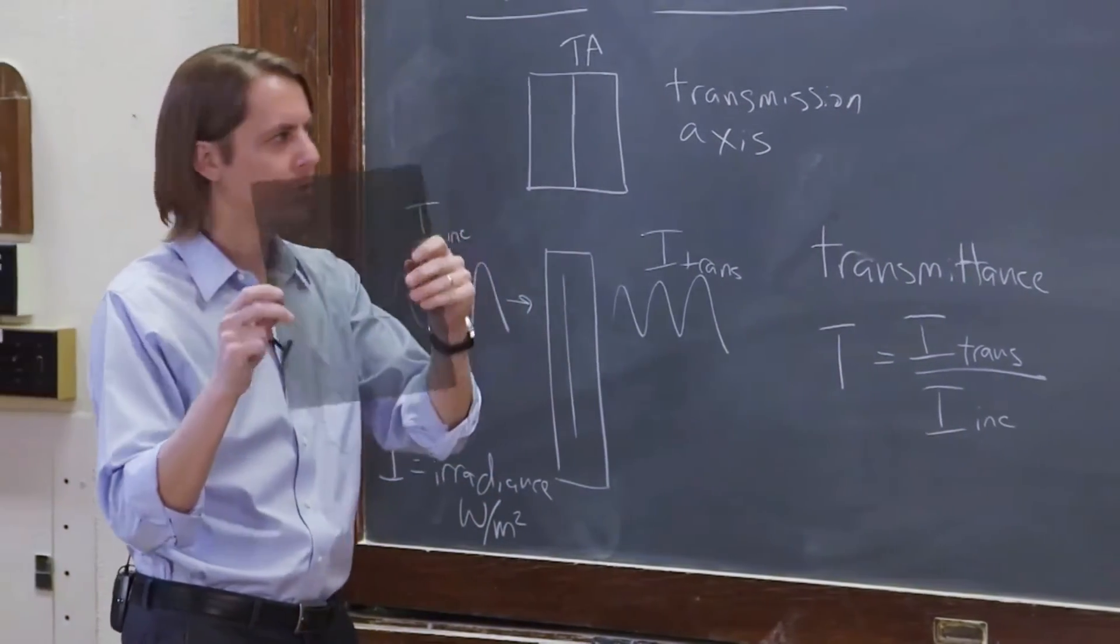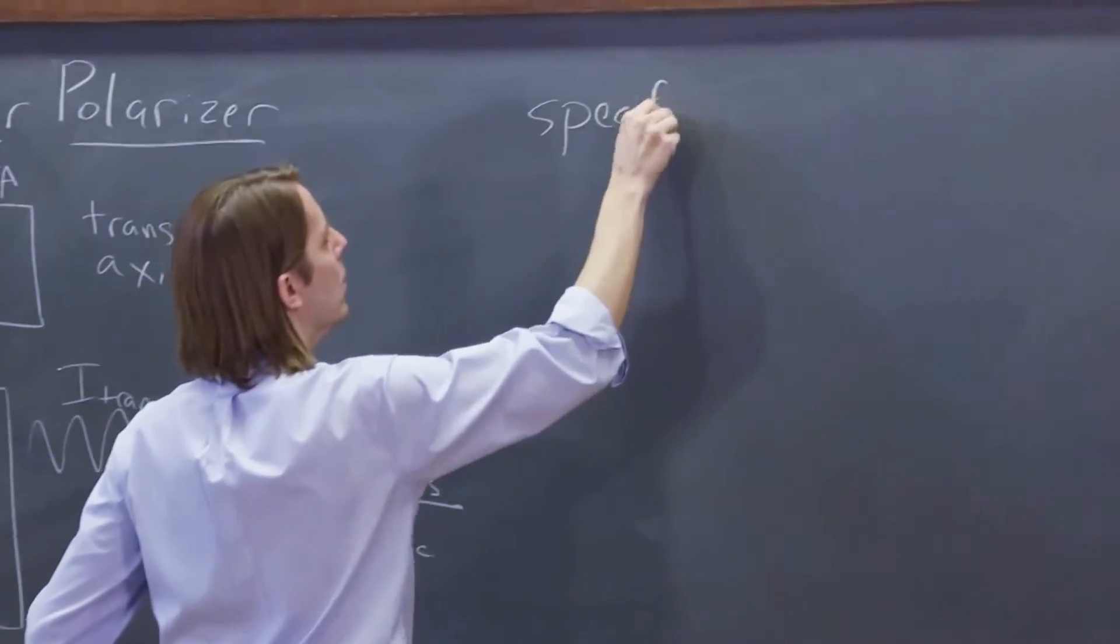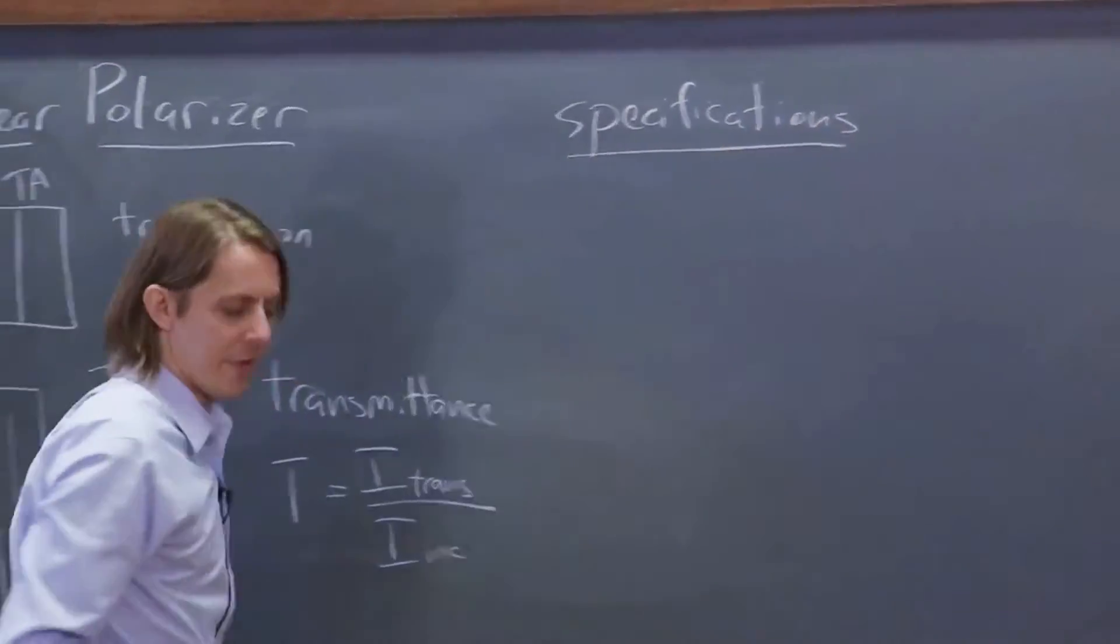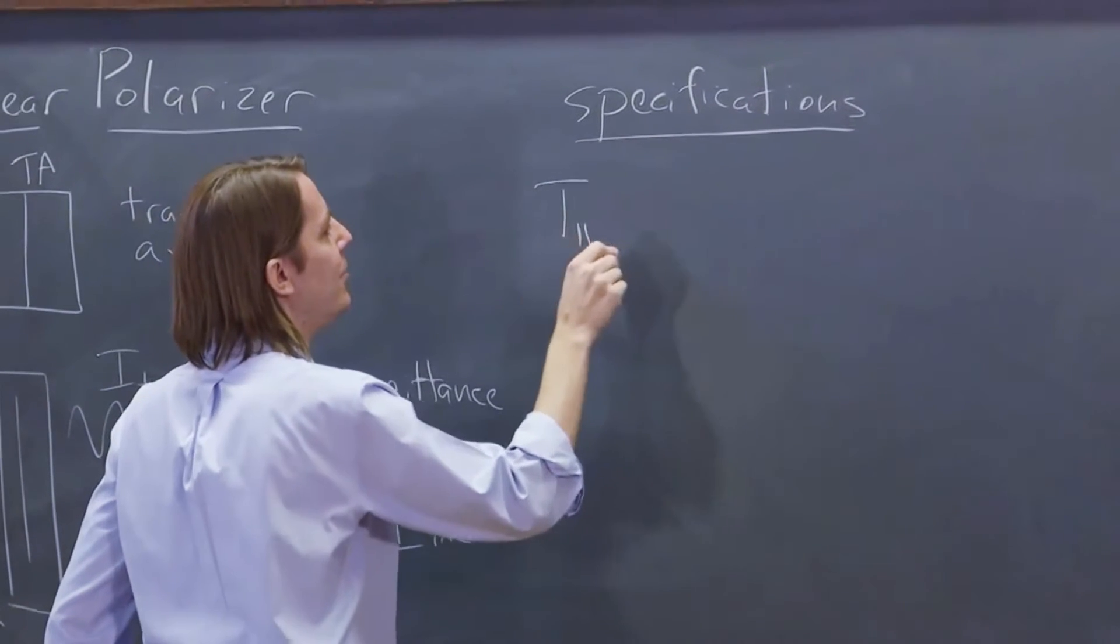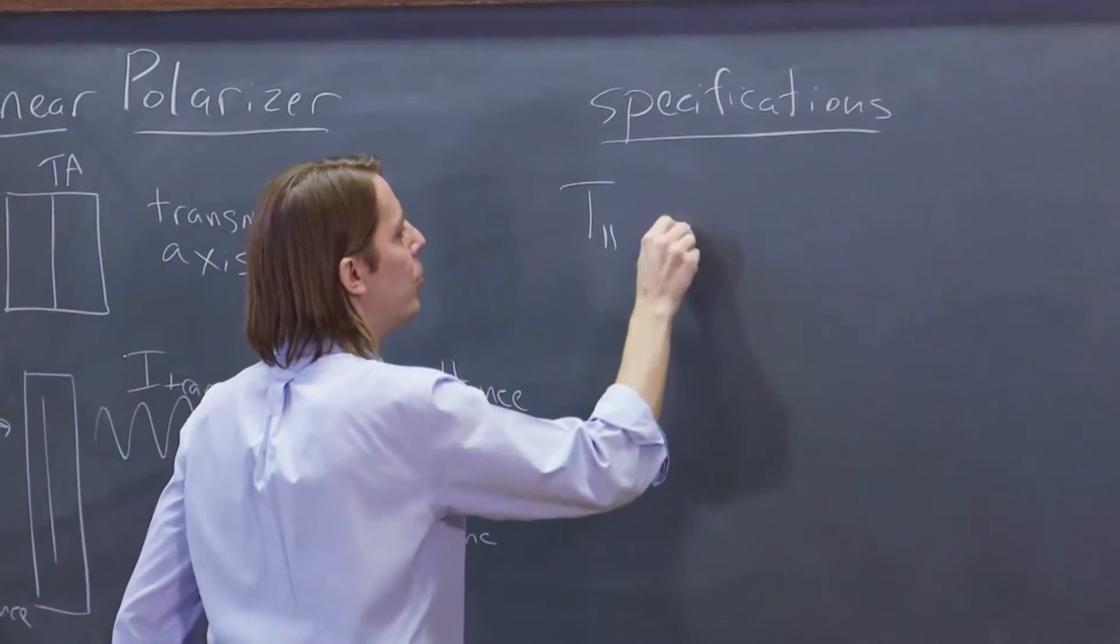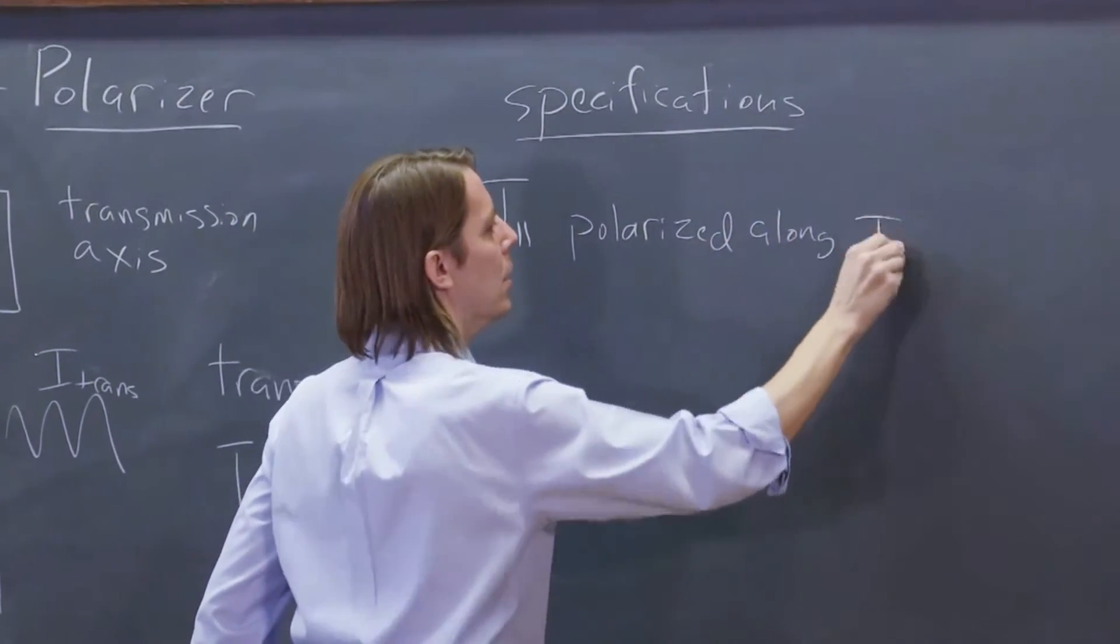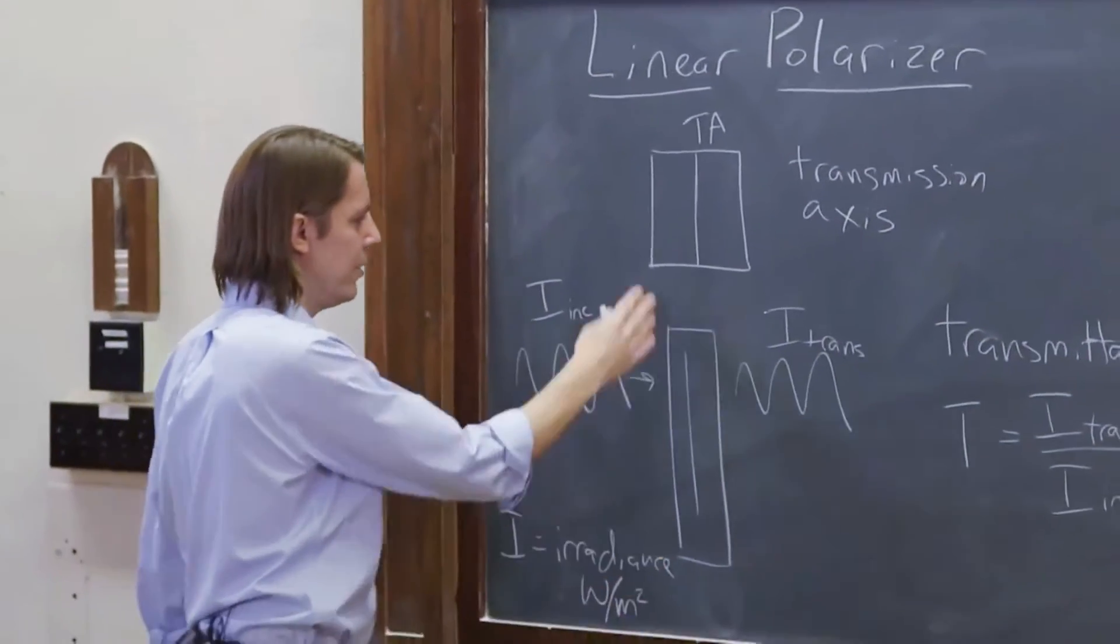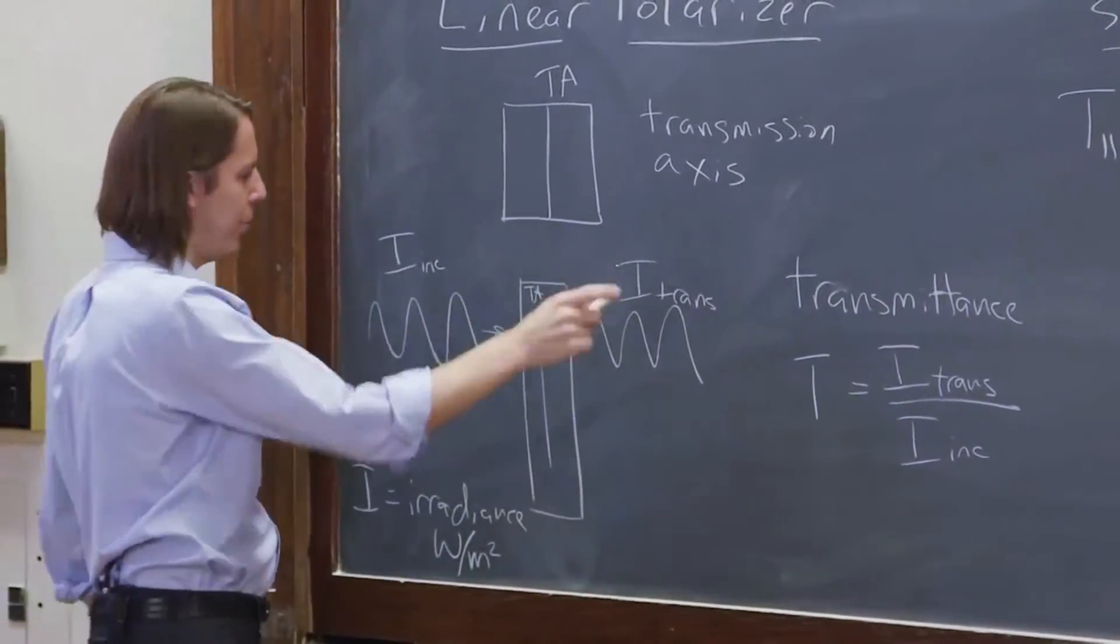Okay. So if we want to give specifications for this polarizer, typical specifications you might see, well, they could give you the transmittance T, and they can call it T parallel. That's the transmittance polarized along the TA, the transmission axis. That's kind of what I drew here. If this is the TA, then I kind of drew it as though it were polarized along the TA.